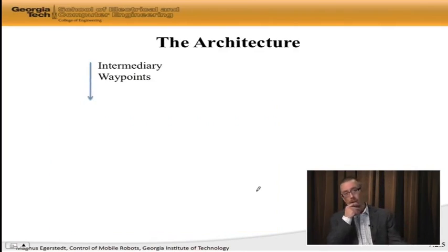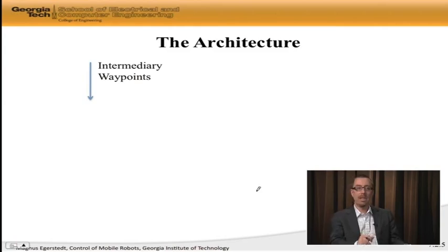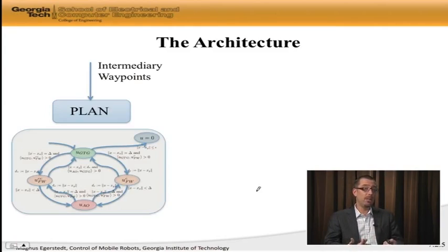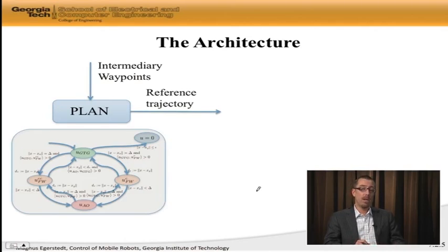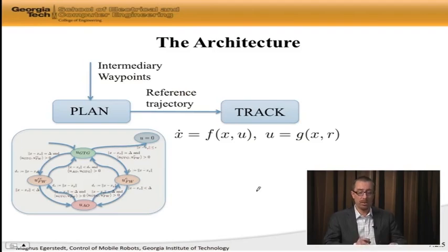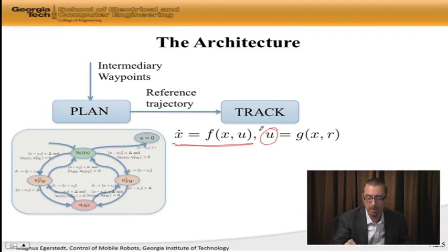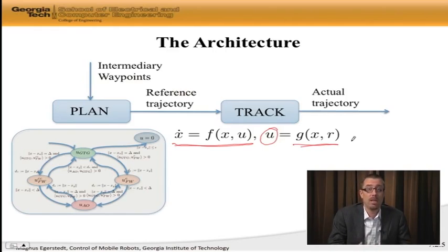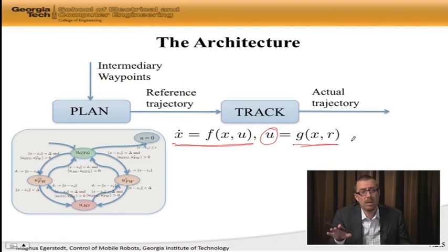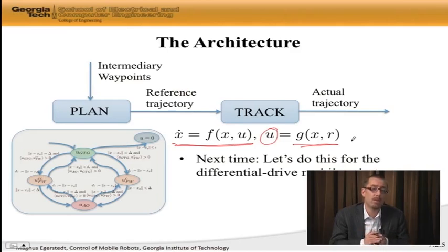What we've now arrived at is a layered architecture where at the highest level we're generating sequences of intermediary waypoints. Those waypoints are fed into the low level plan level, where our navigation architecture generates reference trajectories. These reference trajectories are then fed into our actual non-linear system — the actual dynamics, which is a function of the state and R, where R is the reference. Out of the tracker comes the actual trajectory, or the actual control signals that will be running on the robot. In the next lecture, I want to take this high level view of a layered architecture and apply it to the CAPIRAS, or to differential drive mobile robots in general.